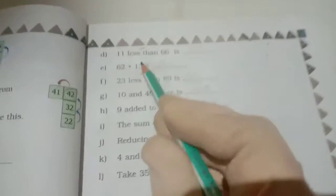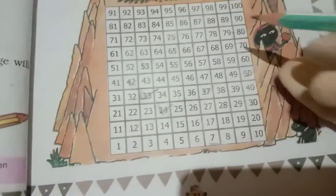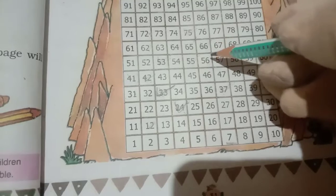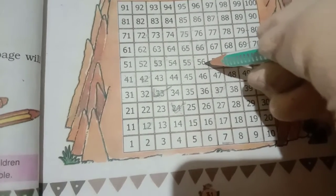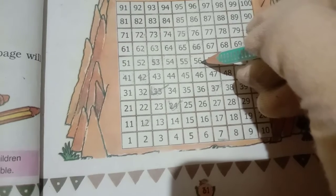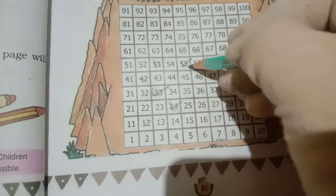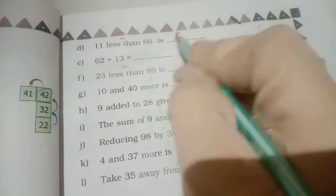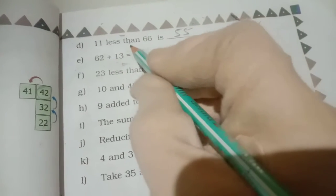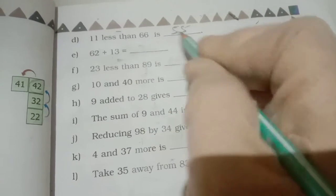Now 11 less than 66. So 66 number is there. That we go down one step means we will get 56. And that left side 1. So we will reach on 55. So answer will come 55. So write in here 55. Less than means minus, 66 minus 11. So answer will get 55.